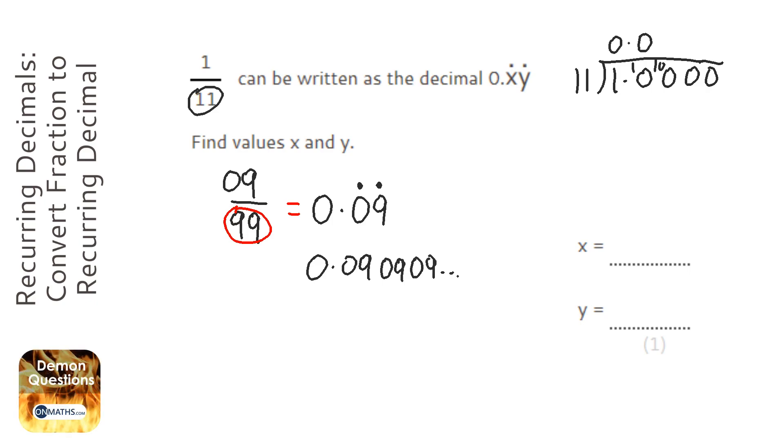Following the long division or bus stop method, 11 into 100 goes 9, carry the 1. 11 into 10 doesn't go, carry the 10, and you can see I get the same pattern. I'm just going to constantly be carrying the 1 and then carrying the 10 forever.